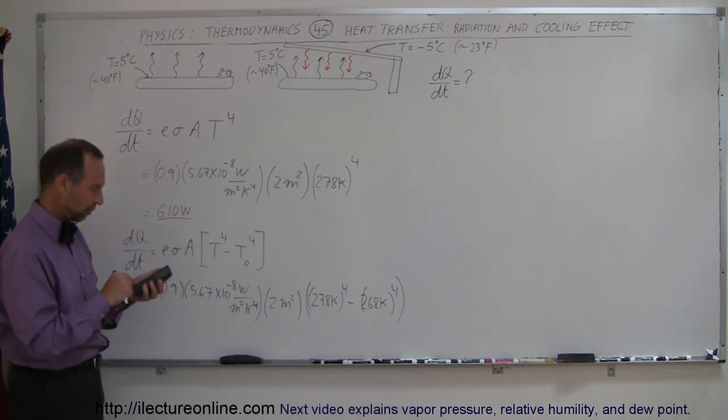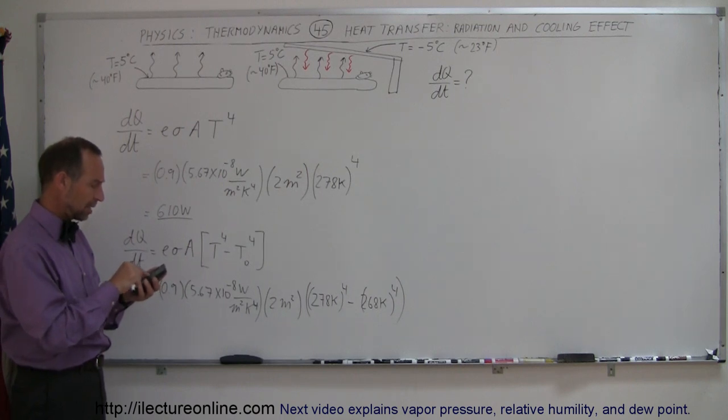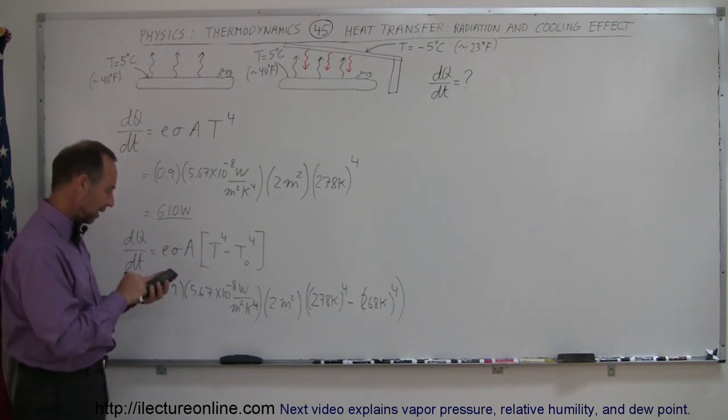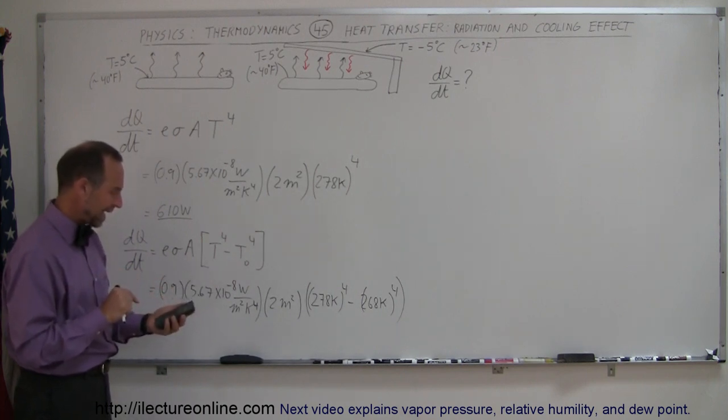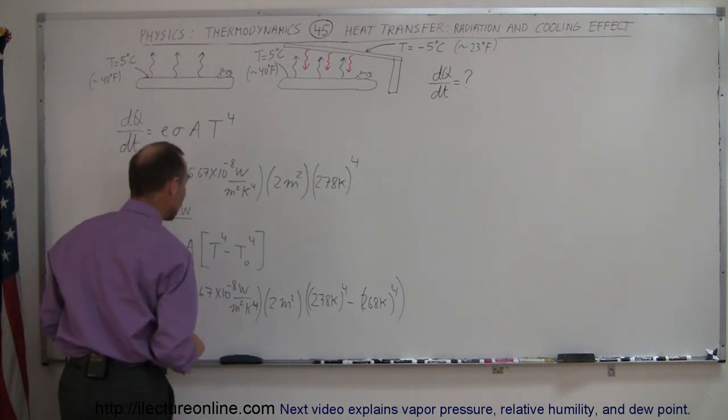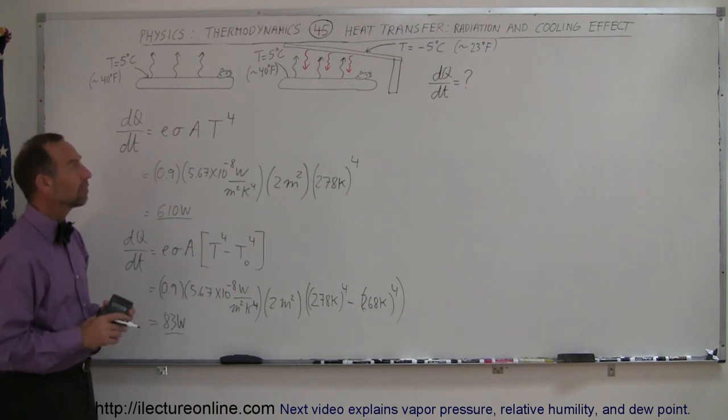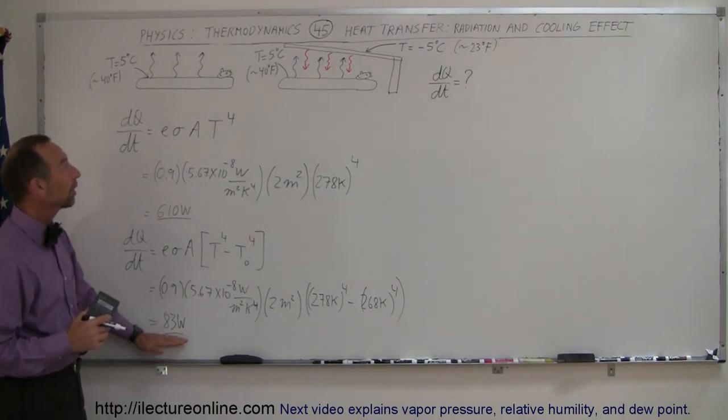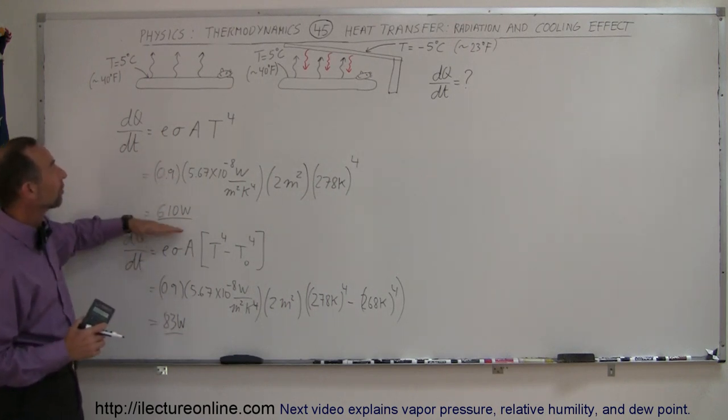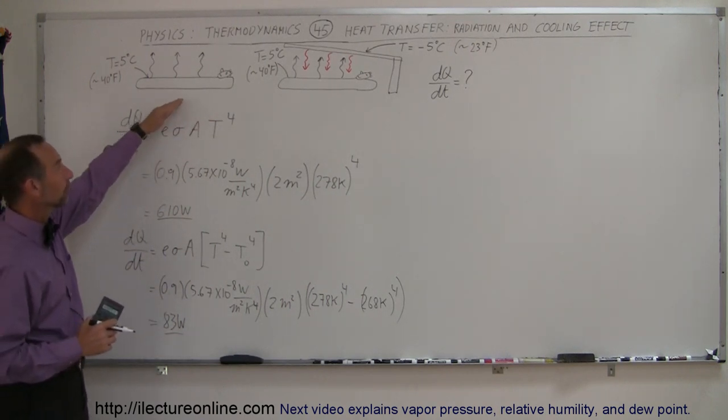So what would be the difference here? So I have 278 to the fourth power minus 268 to the fourth power, multiply times 2, multiply times 5.67E minus 8, multiply times 0.9 equals, and I get 83 watts. So notice what a tremendous difference it can make on radiation alone. You'd only be losing 83 watts versus 610 watts by being in need of shelter versus being in the open.